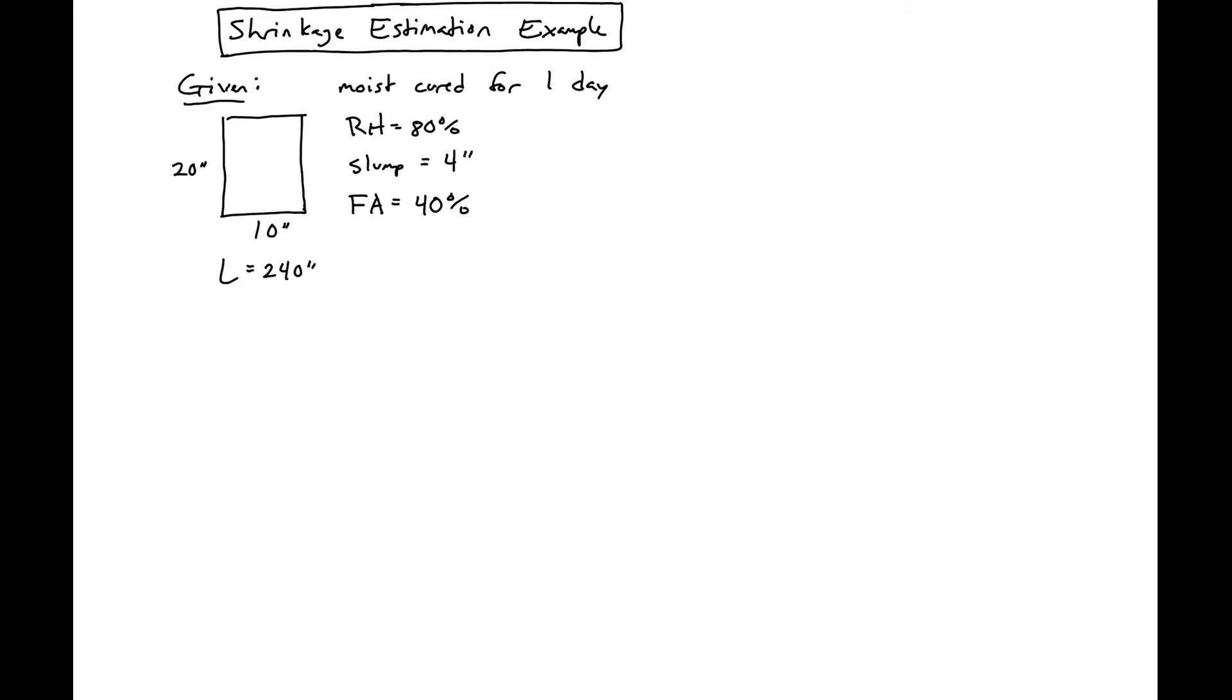The first thing we'll do is calculate the volume to surface area ratio. The volume of the section is 20 inches times 10 inches times 240 inches, which equals 48,000 cubic inches.